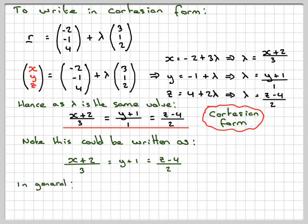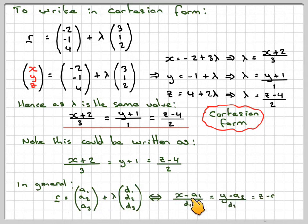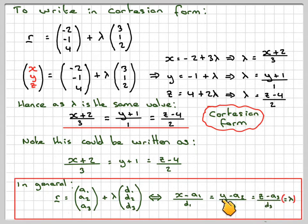So in general, the vector equation of the line is R = A + λD, and then the Cartesian equation will be (X - A₁)/D₁ = (Y - A₂)/D₂ = (Z - A₃)/D₃. They're all equal to lambda, but we don't normally write that in. What you've got to be able to do is: given one form, can you go to the other form? And given the other form, can you go back? However, just a little word of warning.